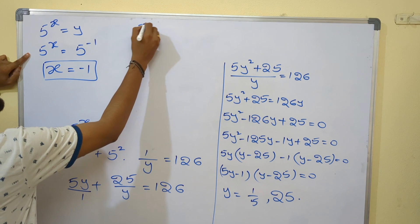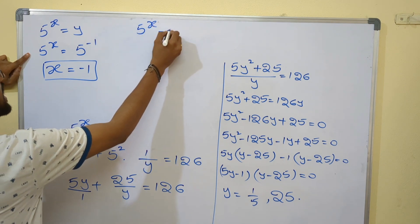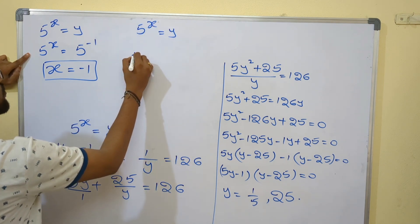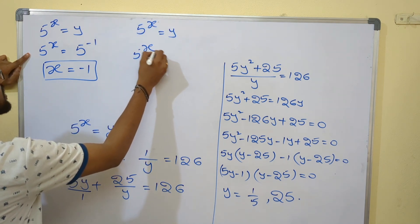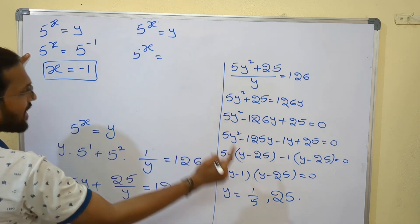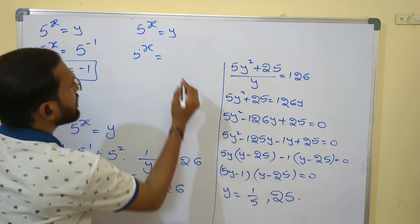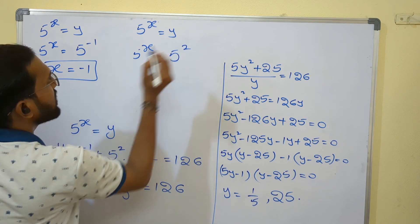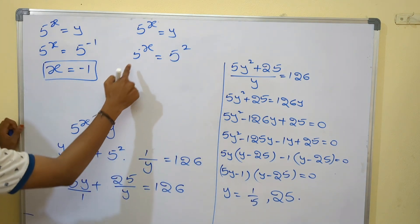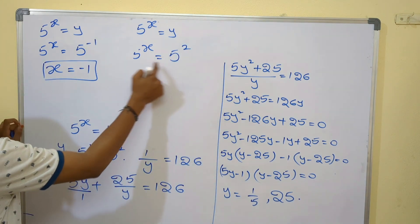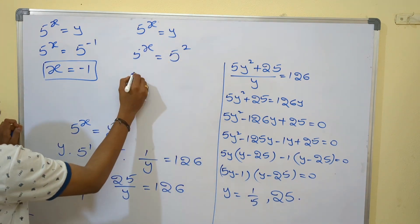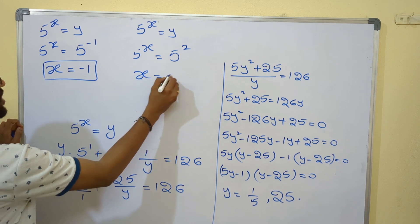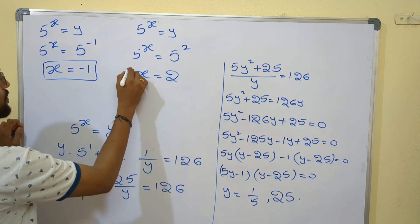In the same way, 5^x = y. Taking the second value y = 25: 5^x = 25, which can be written as 5². Both bases are equal, so powers are also equal: x = 2.